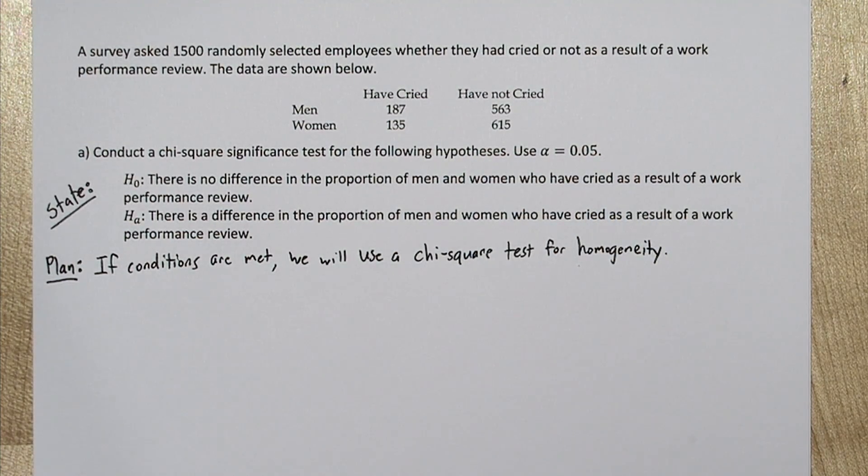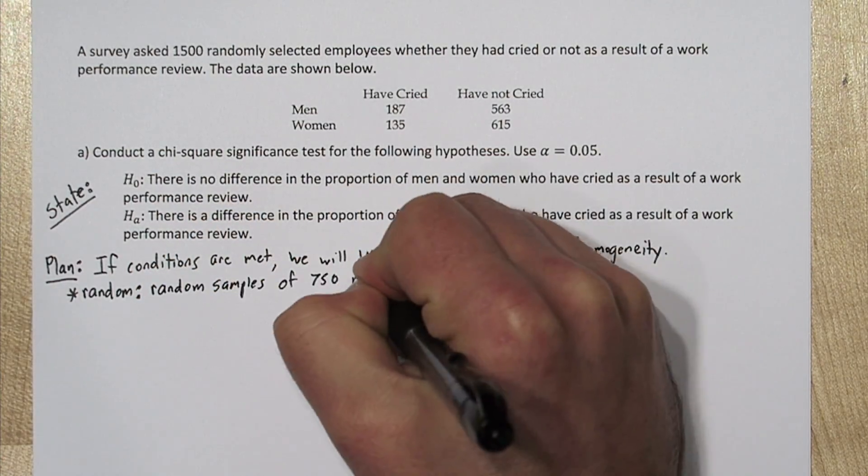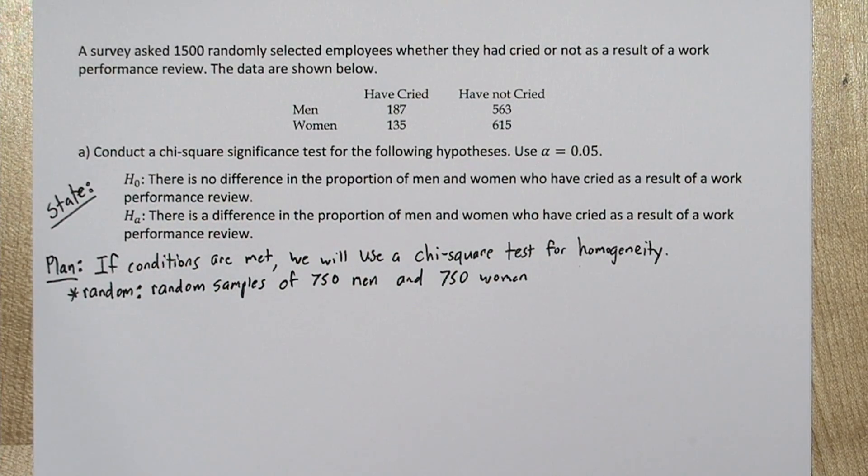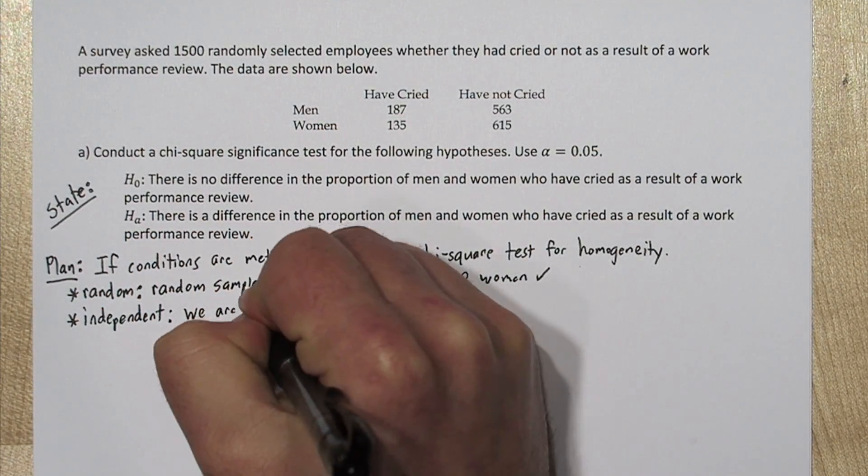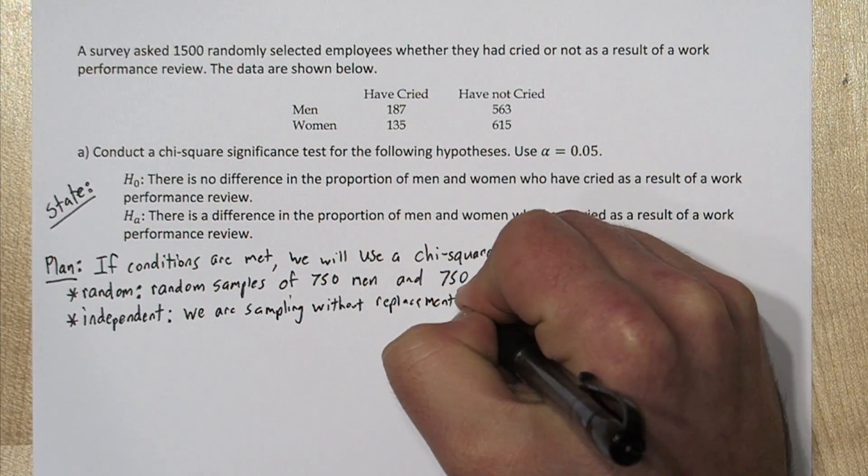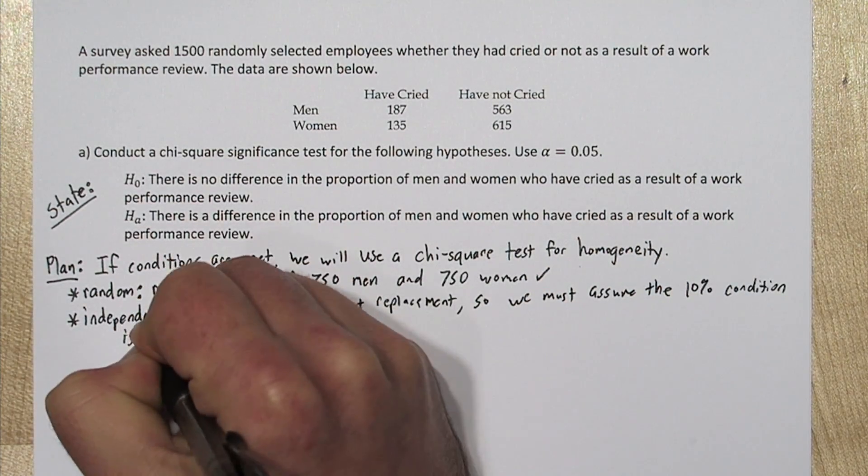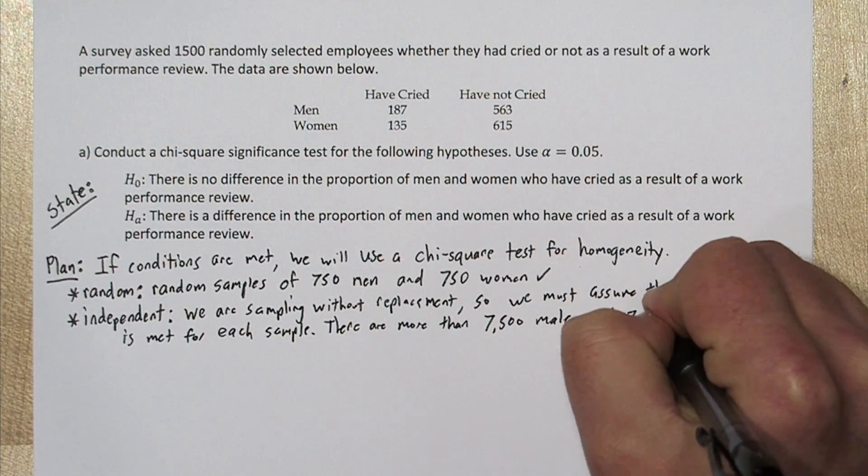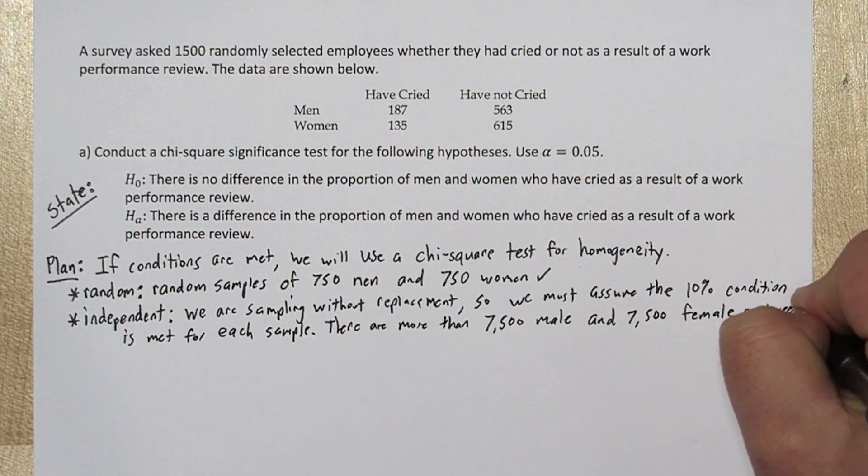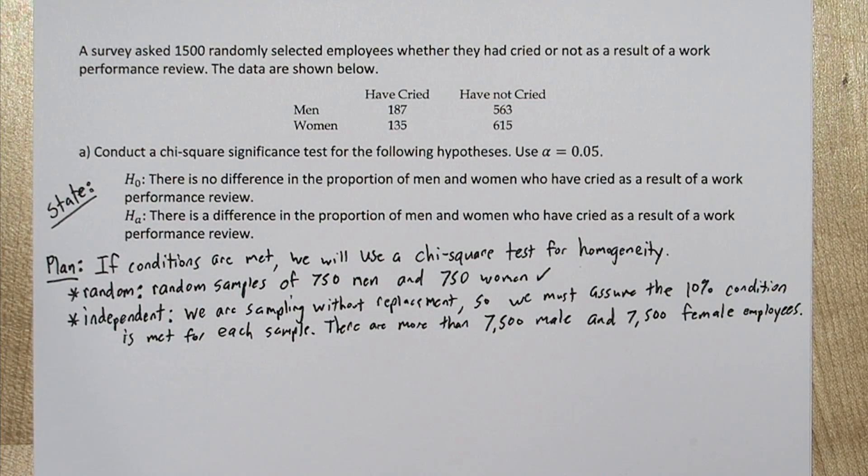So the random condition. From the stem of the problem and the table, we see there was random samples of 750 men and 750 women. So that condition's met. For the independent condition, since we're sampling without replacement, we need to check the 10% condition for both samples. So there are more than 7,500 male and 7,500 female employees. So that condition's met.